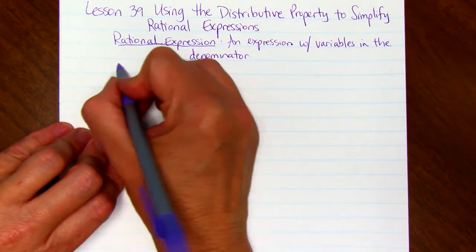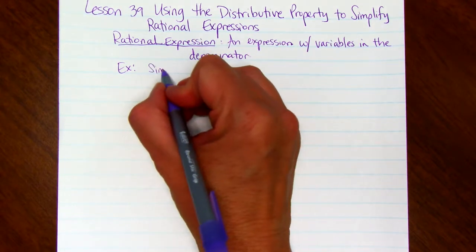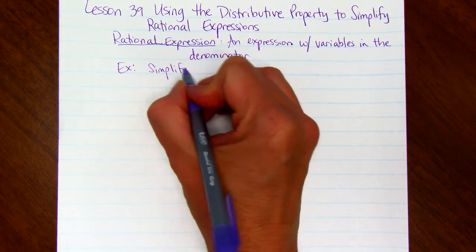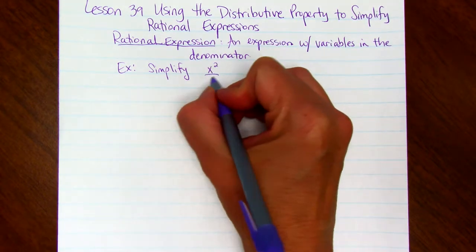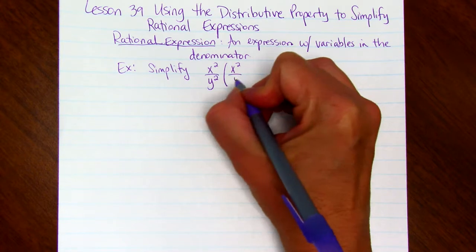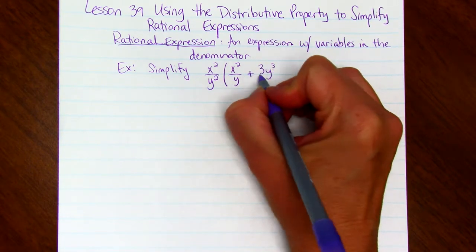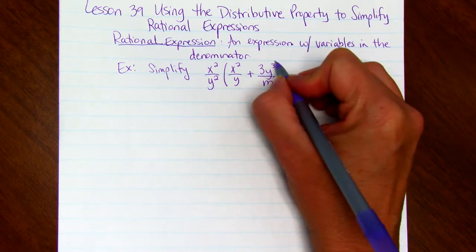So here's an example. Simplify x squared divided by y squared, parentheses, x squared divided by y, plus 3y cubed divided by m, end parentheses.